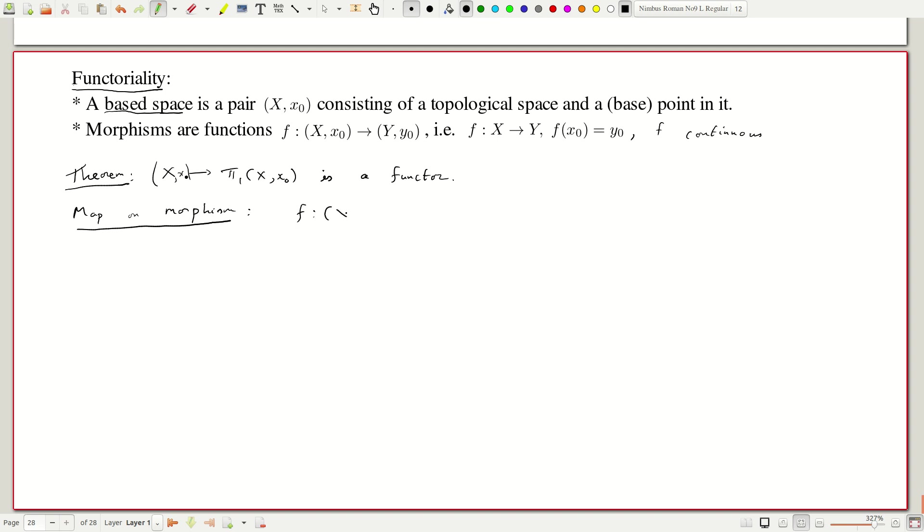Let us map on morphisms. Suppose we have f which maps (X, x₀) to (Y, y₀). We define, we will call this f* which is the standard notation of α as the following. I look at f composed with α. Of course, α is going to map [0,1]. It is better to write it as a diagram. I have [0,1]. This is mapped by α to X and this is mapped by f to Y and you compose it, you get this guy.